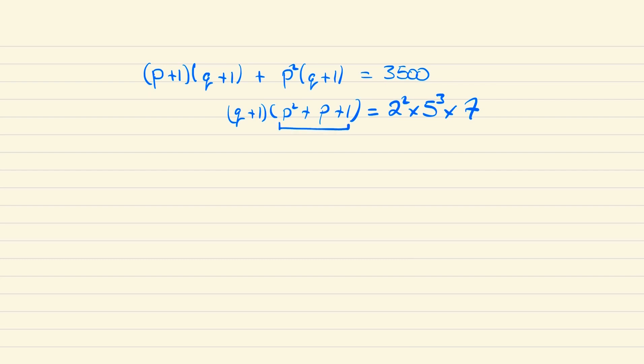Now we can spot that p²+p+1 is odd for all values of p, meaning that q+1 must be divisible by 4. So we can write that q+1 is 4k for some integer k, and so substituting this in, we have that k(p²+p+1) = 5³×7.